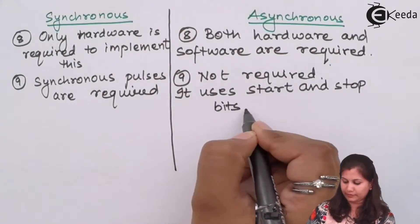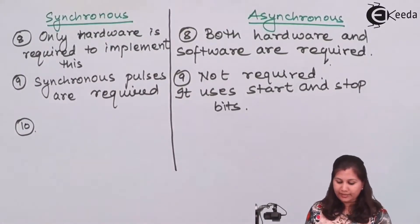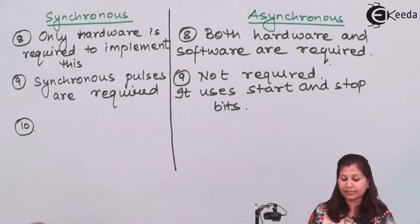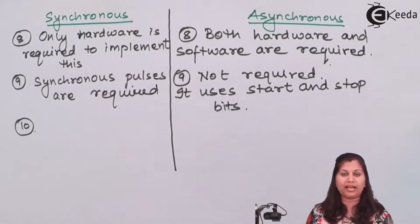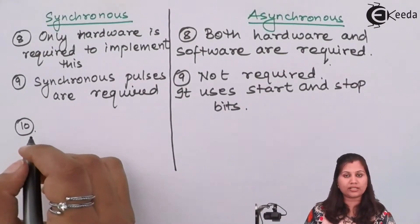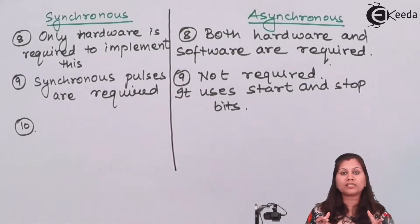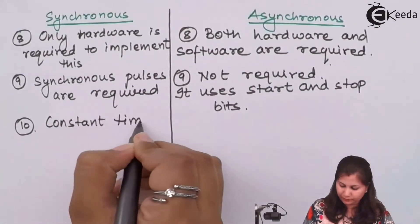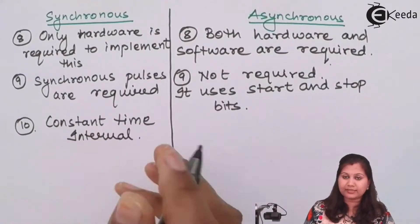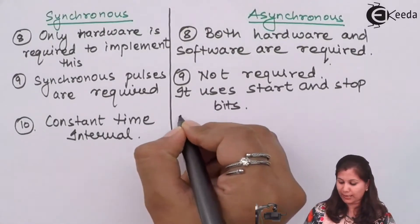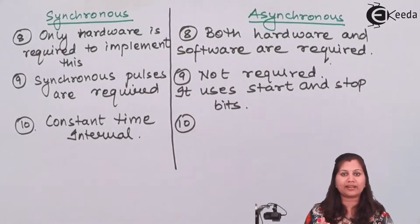The next difference is that in synchronous transmission a constant time interval is required, because blocks and frames of data are transmitted and the clock pulse is a periodic pulse. So synchronous transmission is used in applications where there is a constant time interval between the data. Whereas in asynchronous, since a single bit is transmitted at a time, it can be used in applications where the time interval is random or irregular.